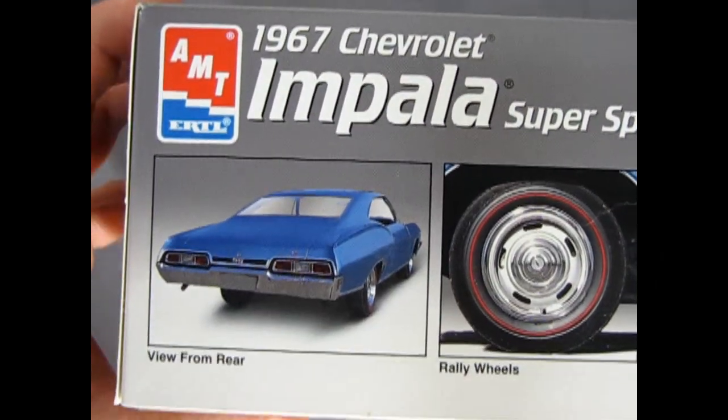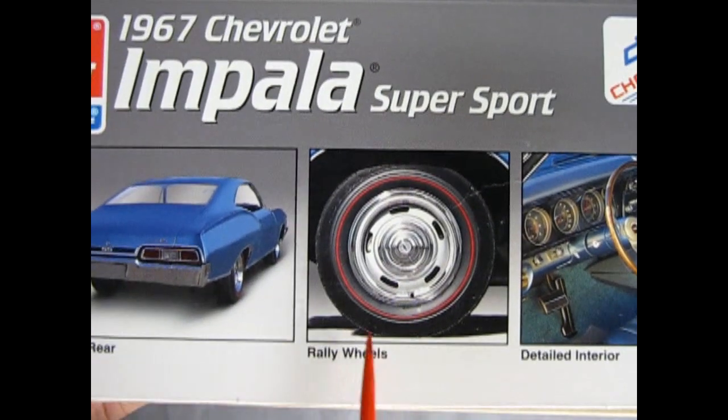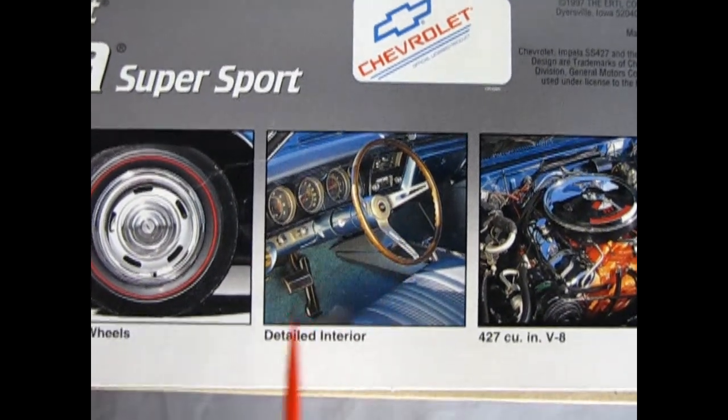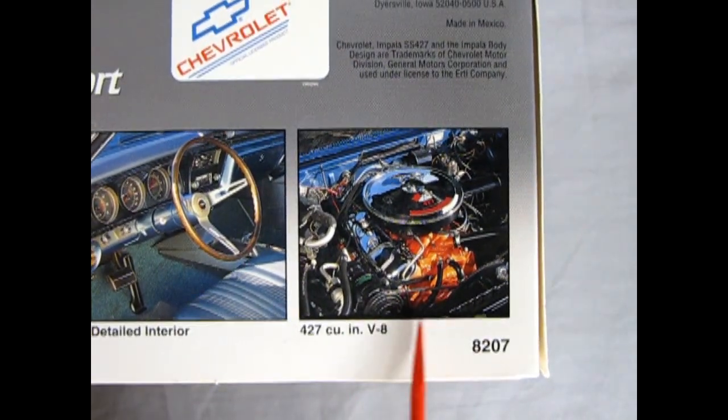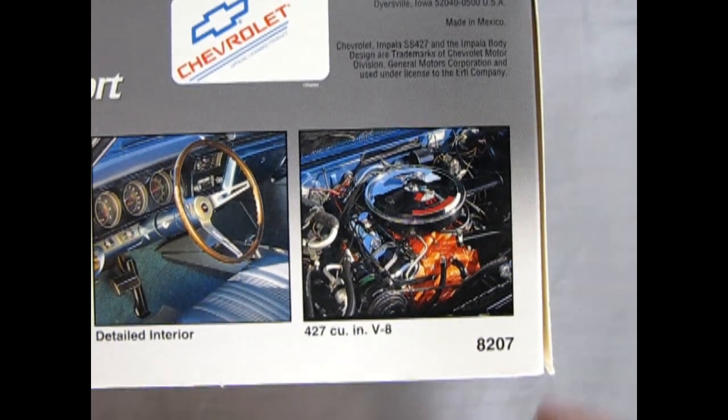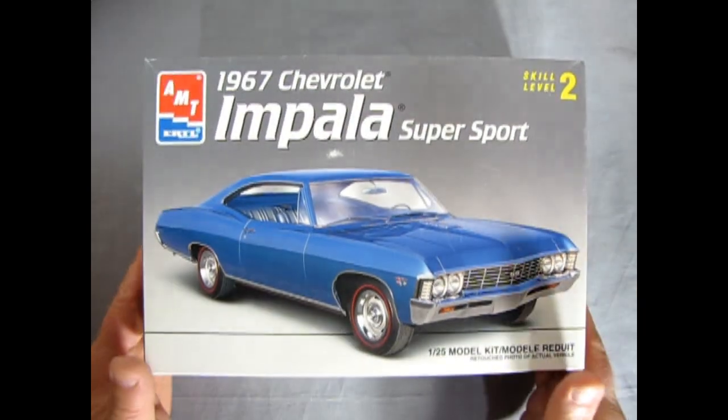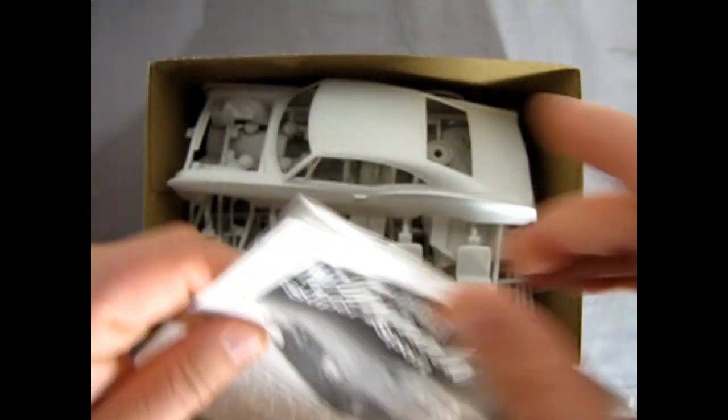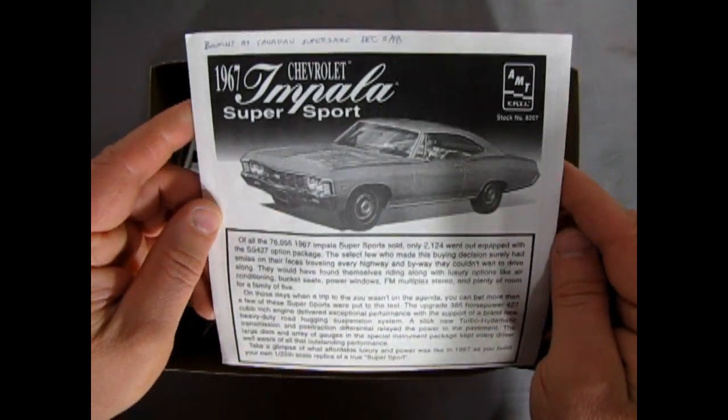And then here we actually get some real pictures of the real car. There's the view from the rear, the rally wheels with the red line tires in there, red wall tires I guess, the detailed interior, and the real 427 cubic inch V8 molded or painted in Chevrolet engine red or orange. So just turn this around this way, open up the lid on this beauty. And of course we have our instruction sheet, bought at Canadian Superstore, that's a grocery store, December 5th, 1998.